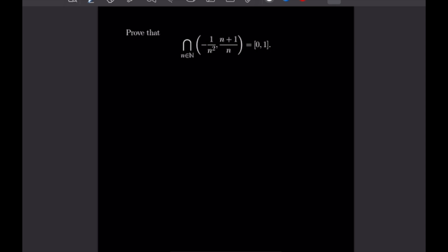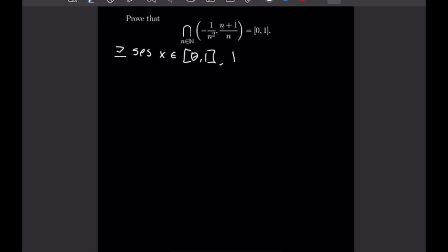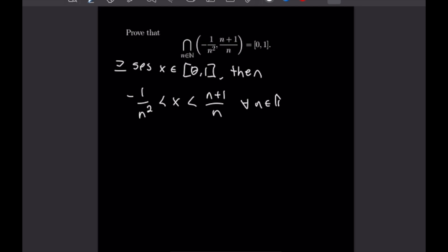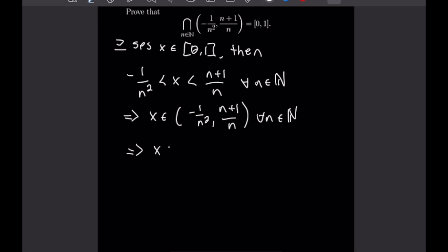For the next proof, we want to show that the infinite intersection across all natural numbers N of the open interval (−1/N², N+1/N) is equal to the closed interval [0,1]. Let's begin with the reverse direction: suppose X is an element of [0,1]. Then X can be bounded by −1/N² on the left and N+1/N on the right for all natural numbers N, which by definition means X is in the open interval (−1/N², N+1/N) for all N, so X is in our intersection.